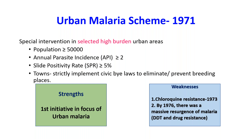Towns were selected that strictly implement bylaws to eliminate vector breeding places. The strength of this Urban Malaria Scheme was that it was the first initiative addressing cases in urban areas. However, its weakness was that in 1973 resistance towards chloroquine began, and by 1976 there was a massive resurgence of malaria mainly due to drug resistance.